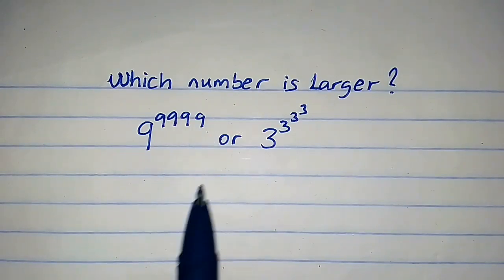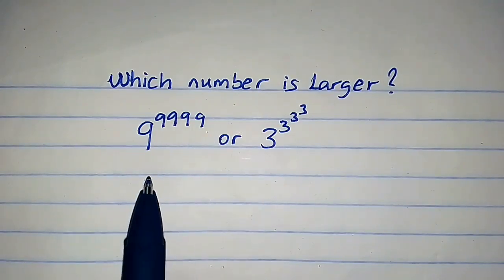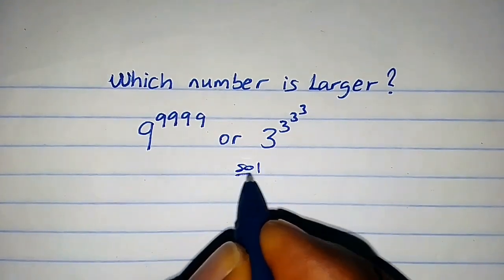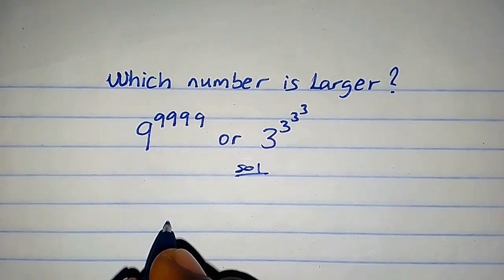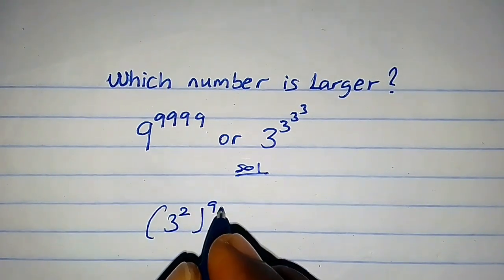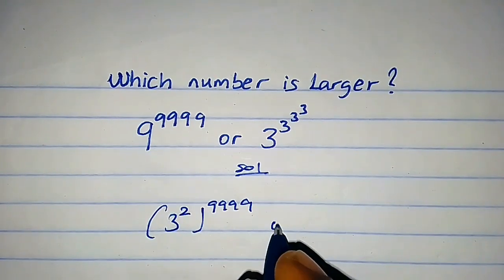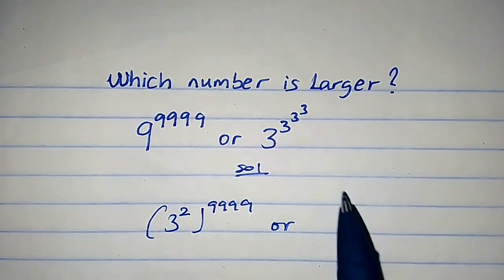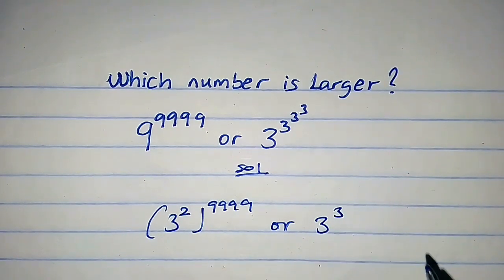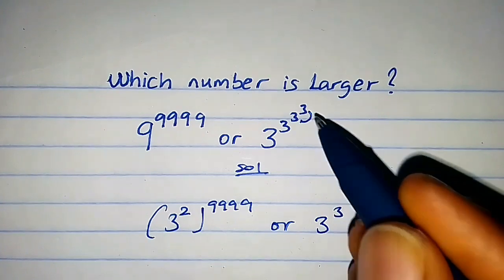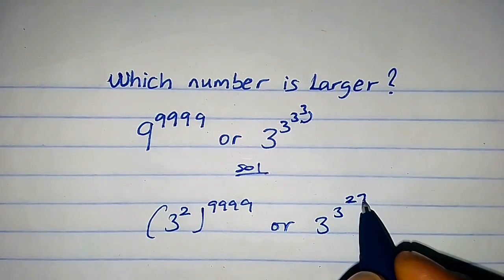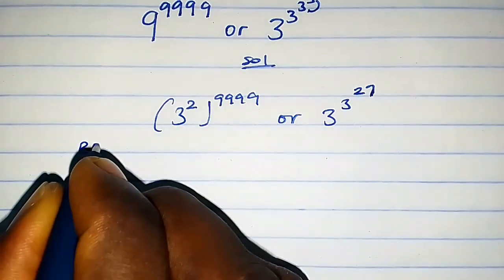We have a beautiful exponent problem: how do we know the larger number between these two? Solution: we can write 9 as 3 squared. So we have 9^9^9^9^9, and we're going to consider this exponent. 3 raised to the power 3 is 27, so we're going to have 27 here.